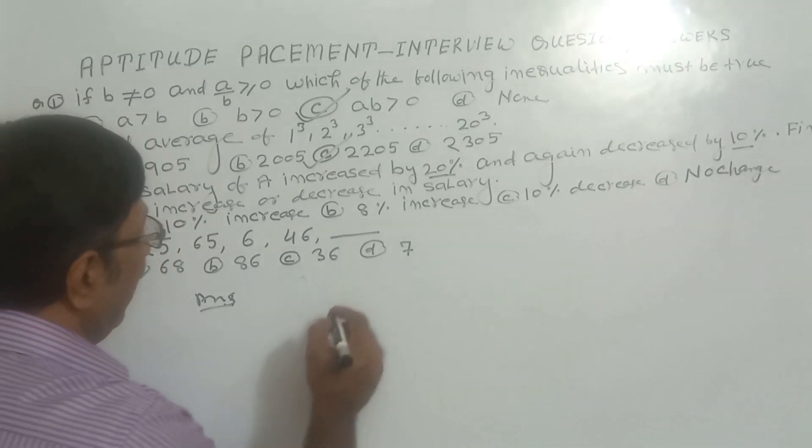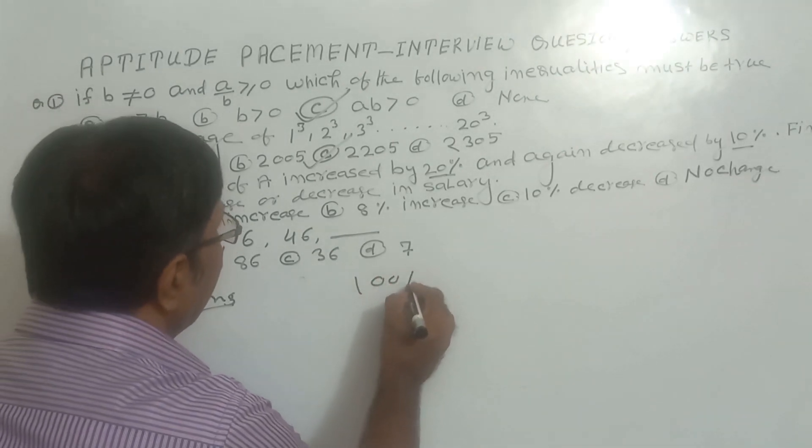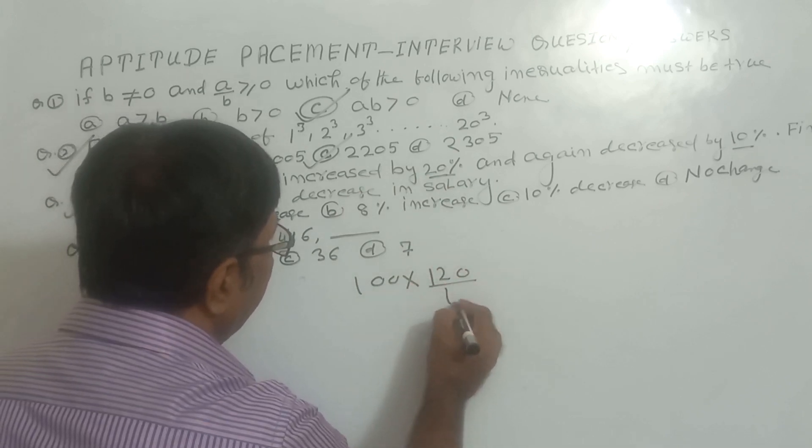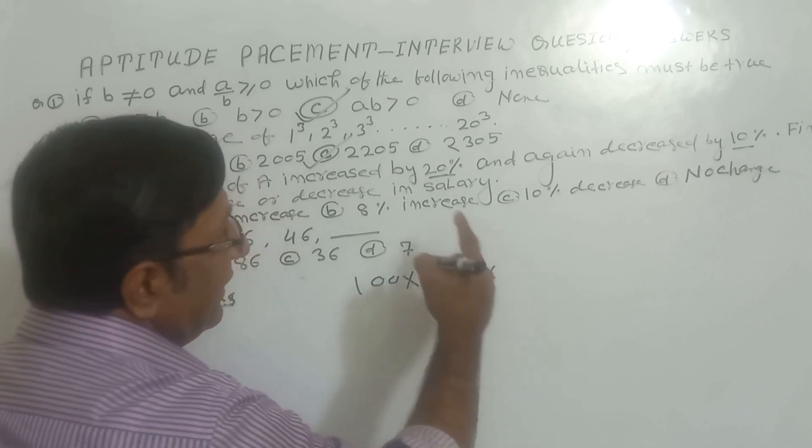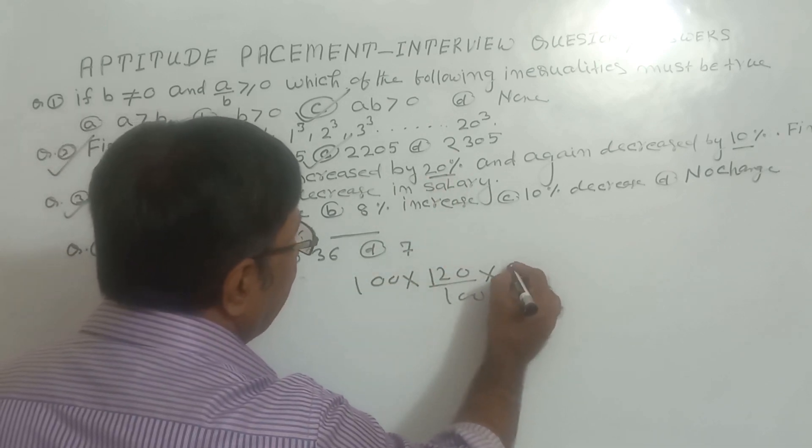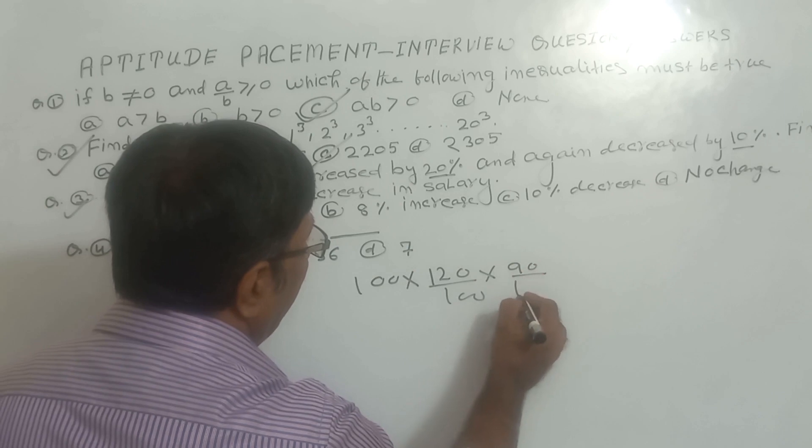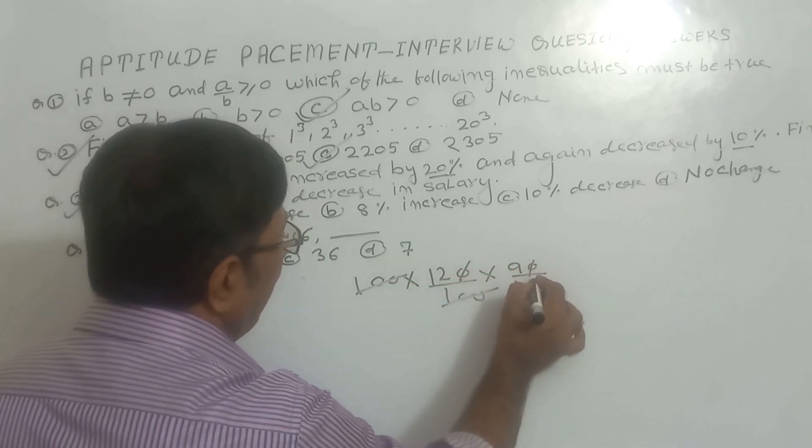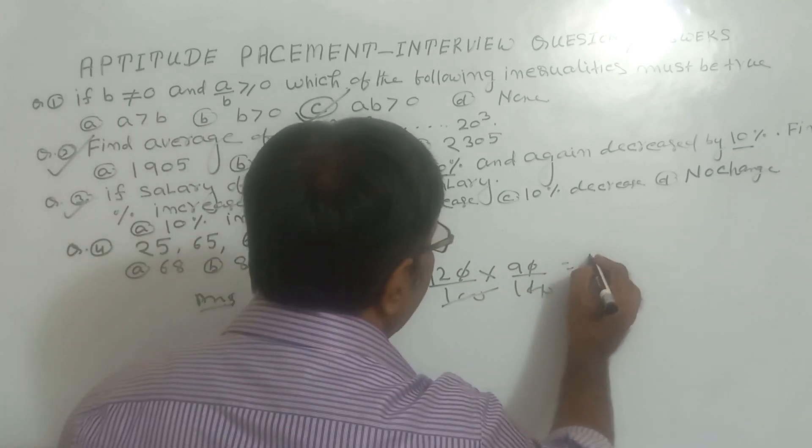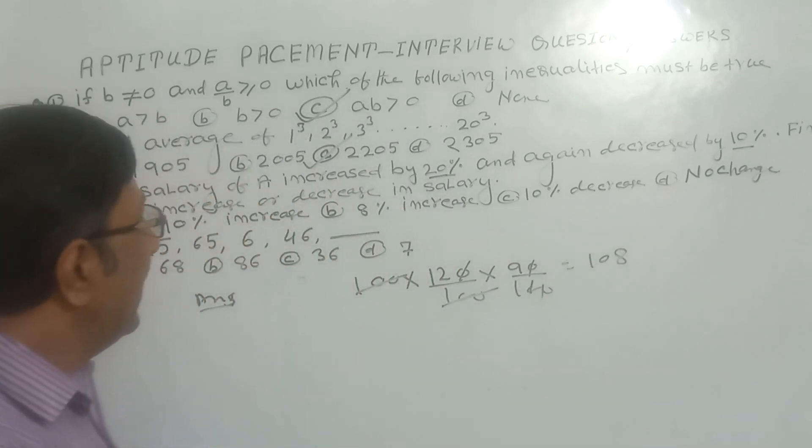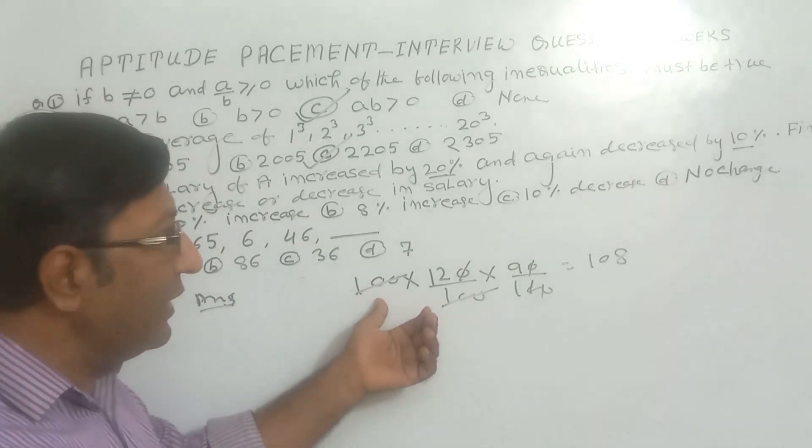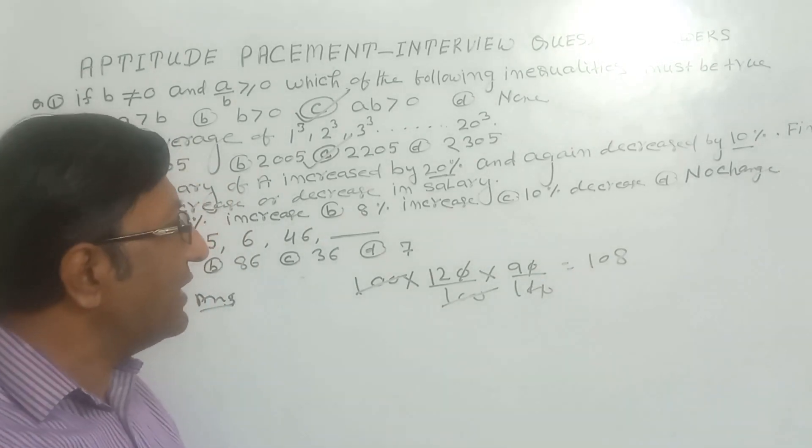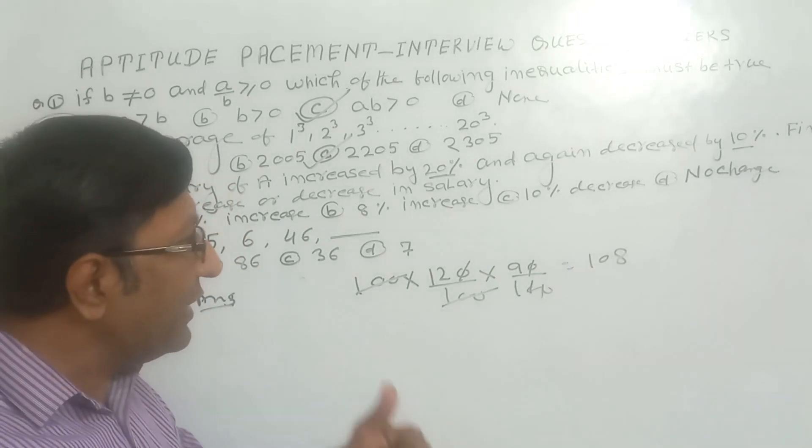So suppose salary of A is 100. Now increase by 20% means 120 by 100. Again decrease by 10%, so 100 minus 10 equals 90, so this will be 90 by 100. So this will be cancelled out and the two zeros will be cancelled out. So we get 108. Initial salary was 100, now the salary is 108. So how much more? 8.